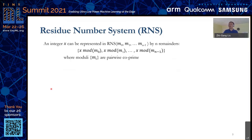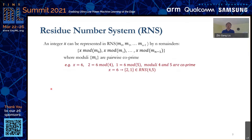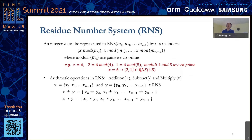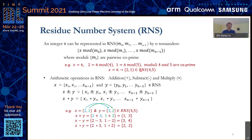The moduli must be pairwise co-prime to each other. For example, if x equals 6, we can represent x in the RNS by the vector 2 and 1. We can also define basic arithmetic operations in the residue number system — plus, minus, and multiply — which are very simple element-wise operations between two values x and y.